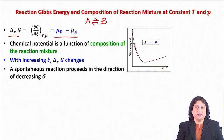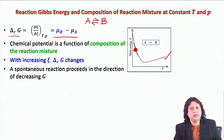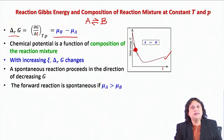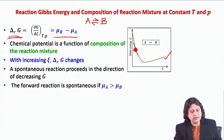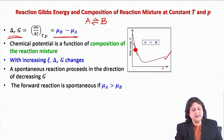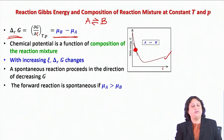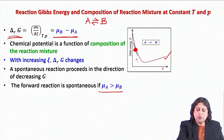For the reaction A ⇌ B, G when plotted against ψ looks like a curve with a minimum. At a point on the left side, the slope of the curve is negative. If the slope — given by ΔRG — is negative, it means μB minus μA is negative, or in other words μA is greater than μB. Therefore, the condition of spontaneity for the forward reaction is: this is spontaneous when ΔRG is negative, which happens when the slope is negative.